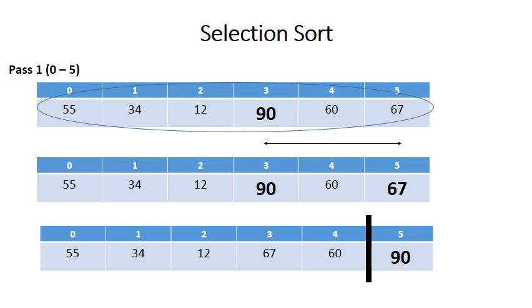Notice that after pass one, the 90 will be at the back, and the list's elements from zero to four are still unsorted.